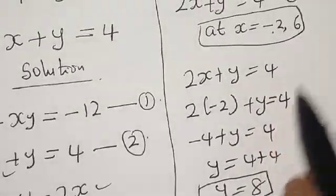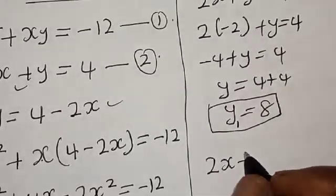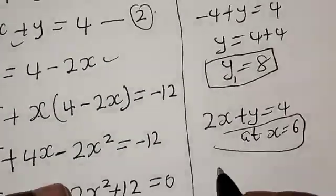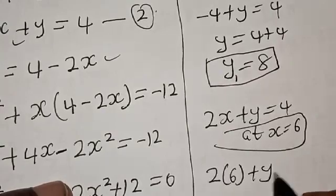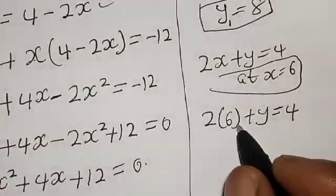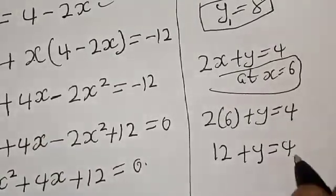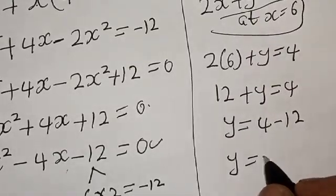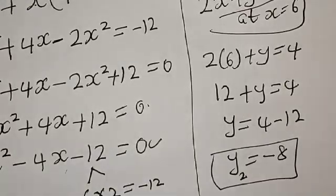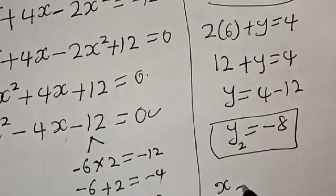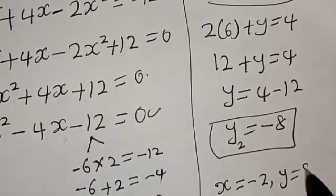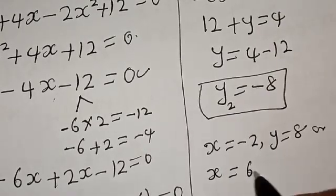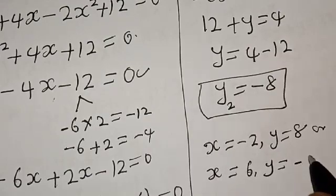Also, at x equals 6, we have 2x plus y equals 4. So 2 times 6 plus y equals 4, giving 12 plus y equals 4, then y equals 4 minus 12, so y equals minus 8. This is our y2. Therefore our final answers are: x equals minus 2 and y equals 8, or x equals 6 and y equals minus 8.